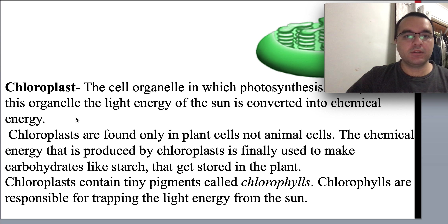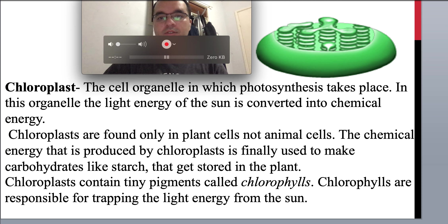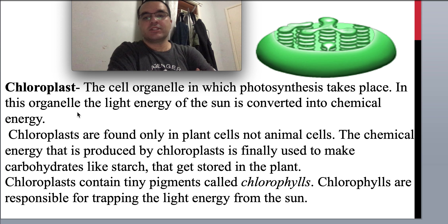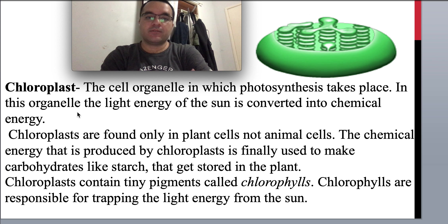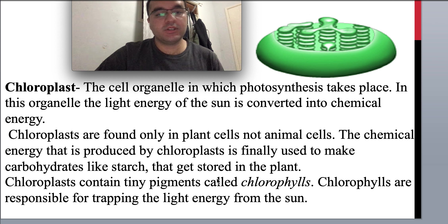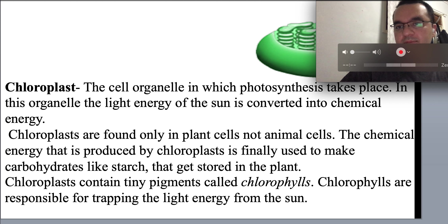The chloroplast is the cell organelle in which photosynthesis takes place — where the light energy of the sun is converted into chemical energy, along with the use of water and carbon dioxide, producing oxygen as a by-product. Chloroplasts are found only in plant cells, not in animal cells. The chemical energy produced by chloroplasts is ultimately used to make carbohydrates like starch. Chloroplasts contain tiny pigments called chlorophyll, which is responsible for trapping light energy from the sun.